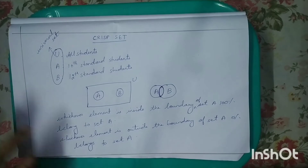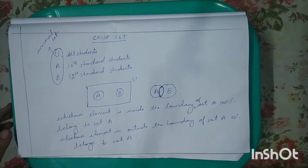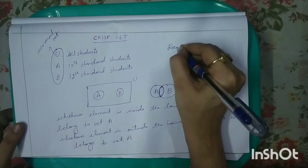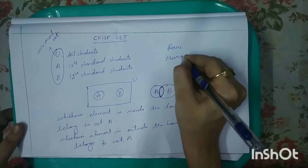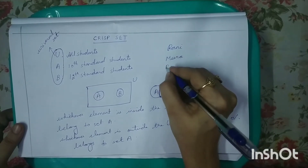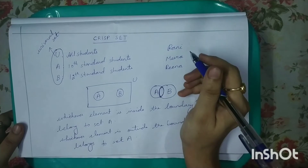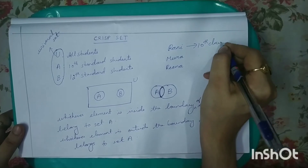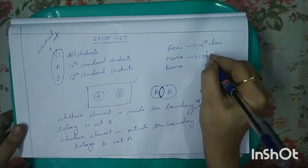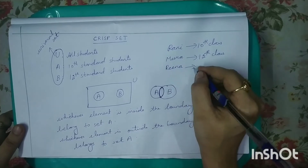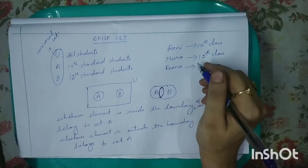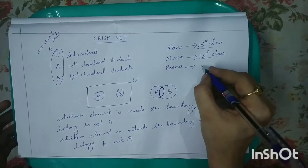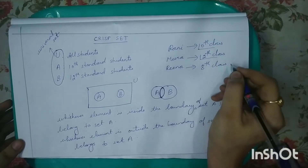Now let me explain these two statements with an example. Let us take three students: the first student's name is Rani, the second student's name is Meera, and the third student's name is Rina. Rani is studying in 10th class, Meera is studying in 12th class, and Rina is from the same school Good Shepherd but she is not in 10th or 12th class — she is in 8th class.